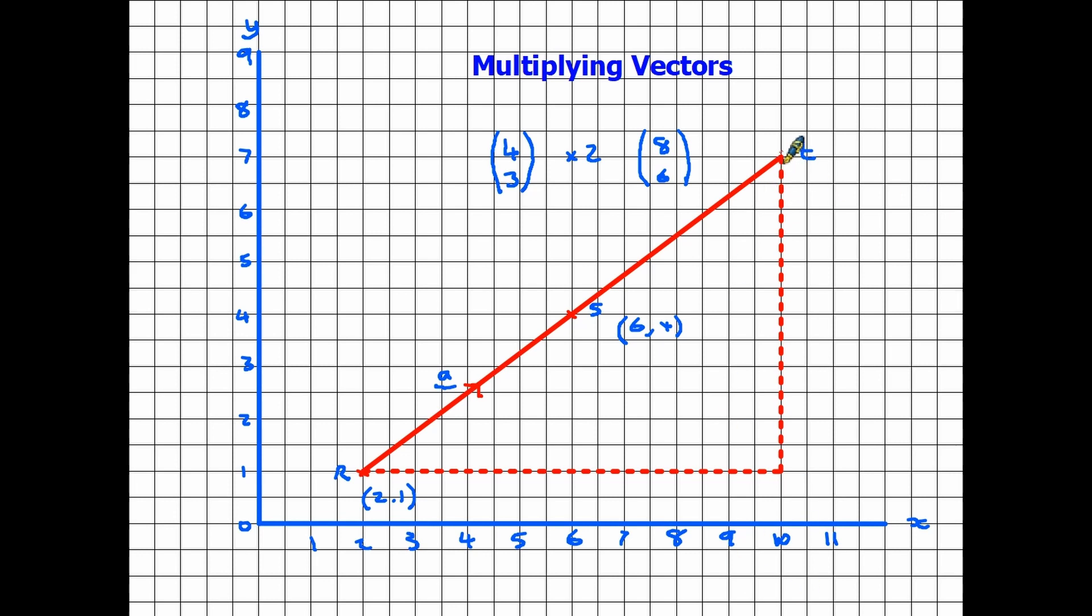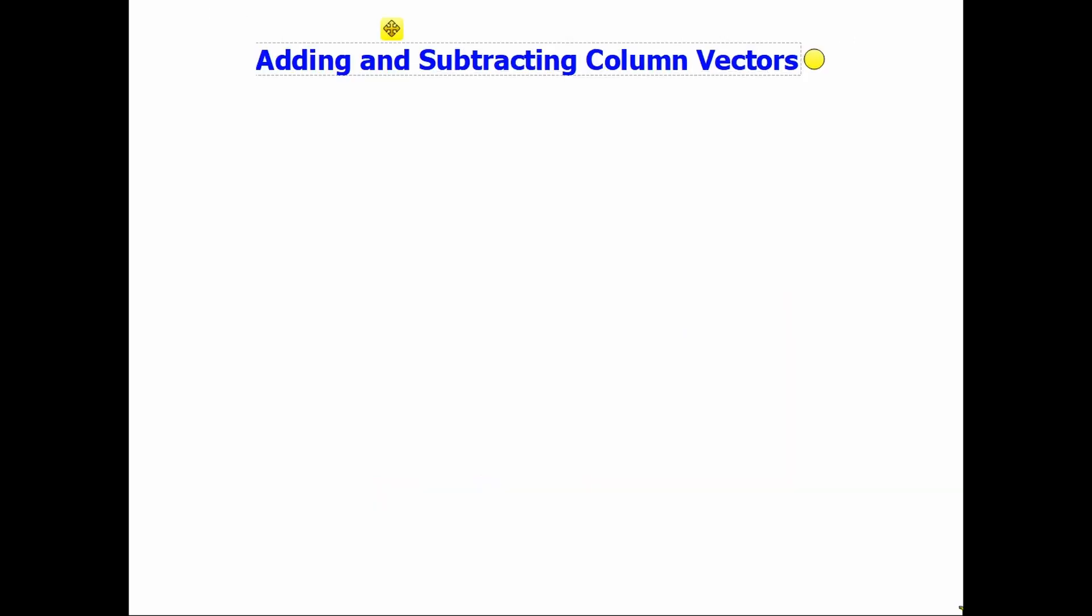And you can see that the vector is now twice as long but it does not change direction. You are simply continuing the line for double the length. Times 2. And similarly times 3 would take you further. You can go times 0.5 which would mean you would only end up halfway between R and S.